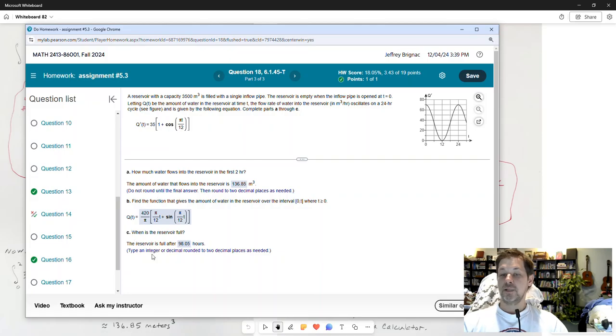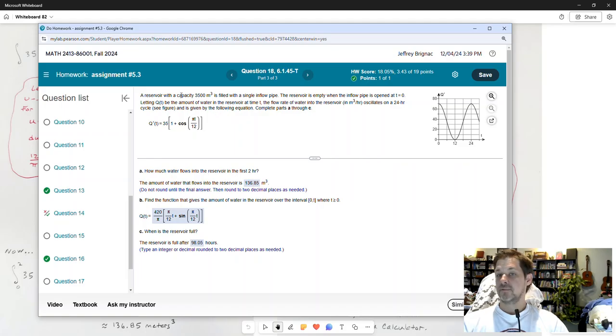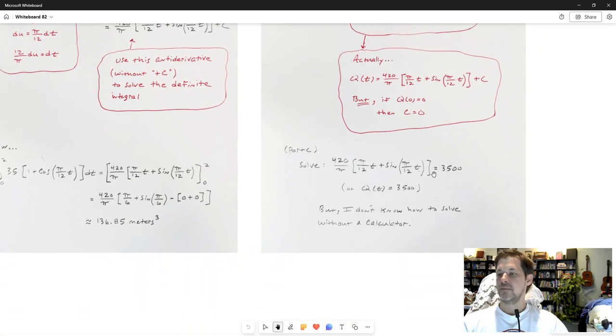Last question: When is the reservoir full? At this point, I know how much water is in there at any time. It's q(t), 420 over pi, etc., without that constant. How do I know when it's full? Well, how much does it hold? The reservoir has a capacity of 3,500 cubic meters. So the answer to when it's full is to solve for time this equation. This is q(t), which tells me how much is in there, and I wonder at what time is it 3,500.